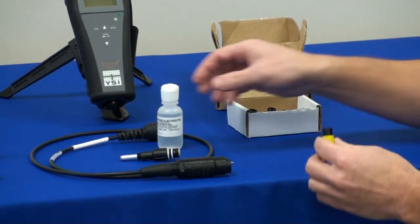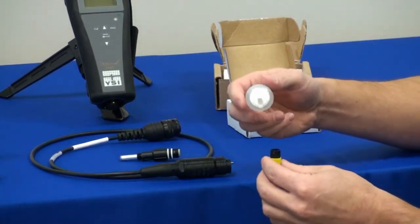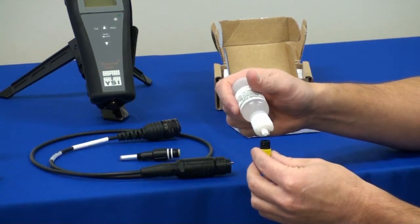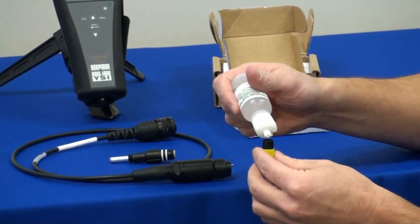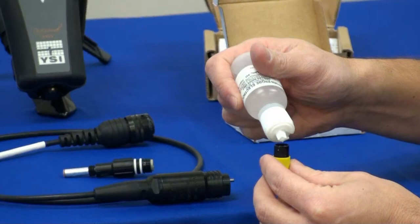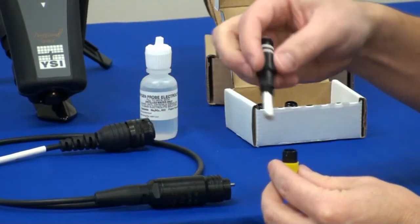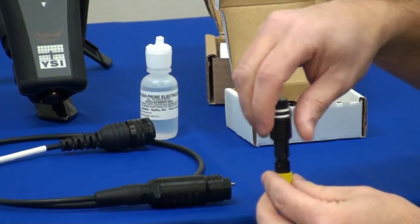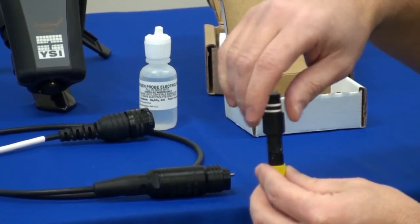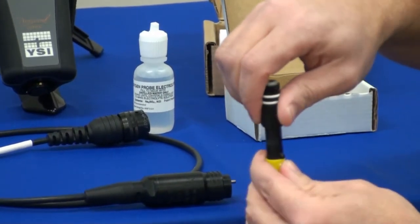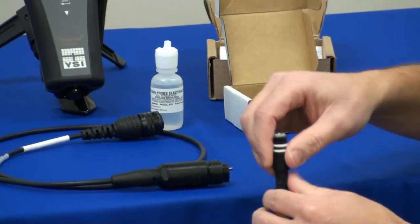So I'm going to go ahead and open up and install the membrane. Go ahead and put about 12 drops. Put the sensor in. Screw it on. Should have some solution overflowing. Get a nice tight seal.